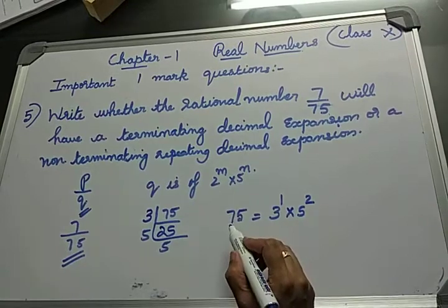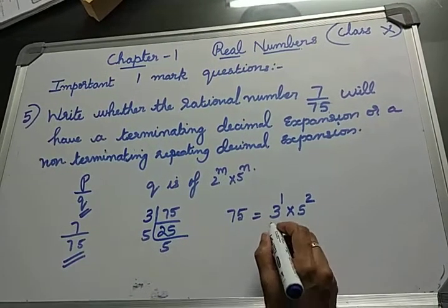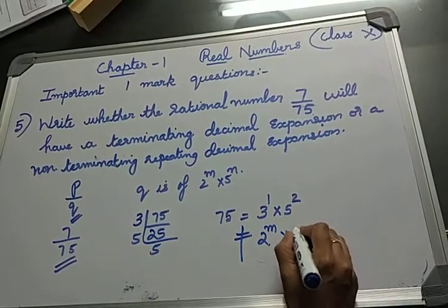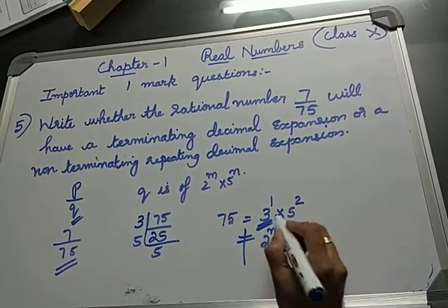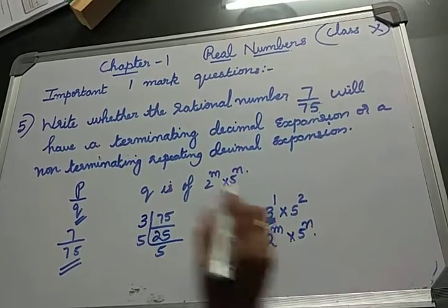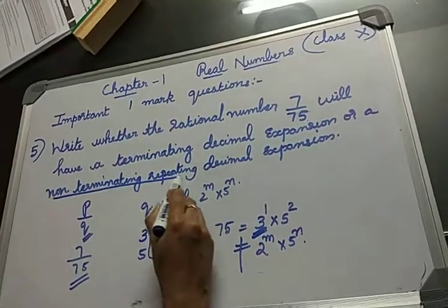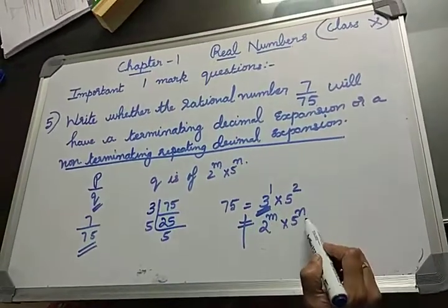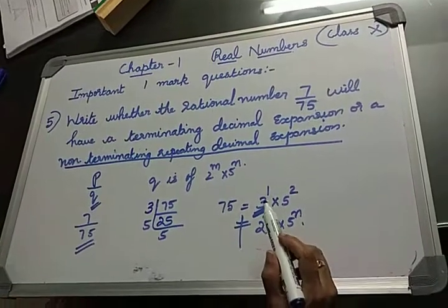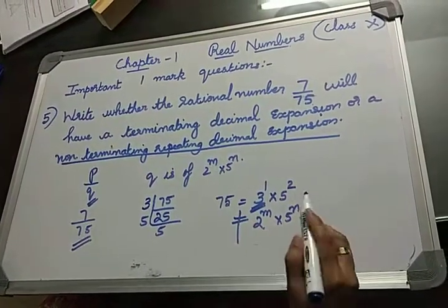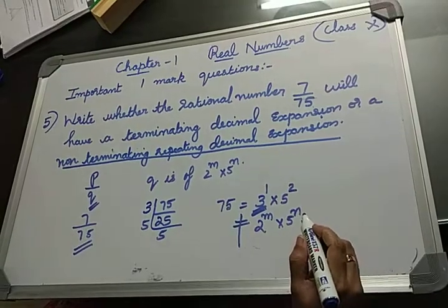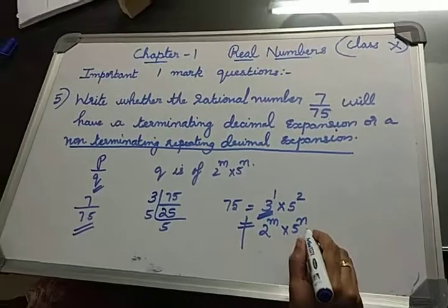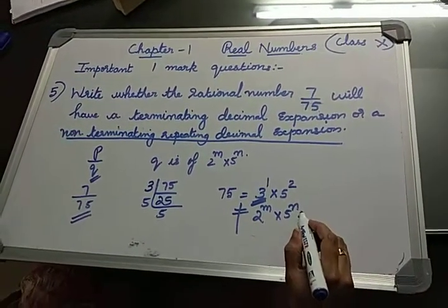The denominator is not of the form 2^M × 5^N - we have 3 here. So this is a non-terminating repeating decimal expansion. This is an important one mark question. If you want more clarification, I have done a video on this. Please share with your friends and subscribe. We have seen 5 important questions today. Thank you for watching.